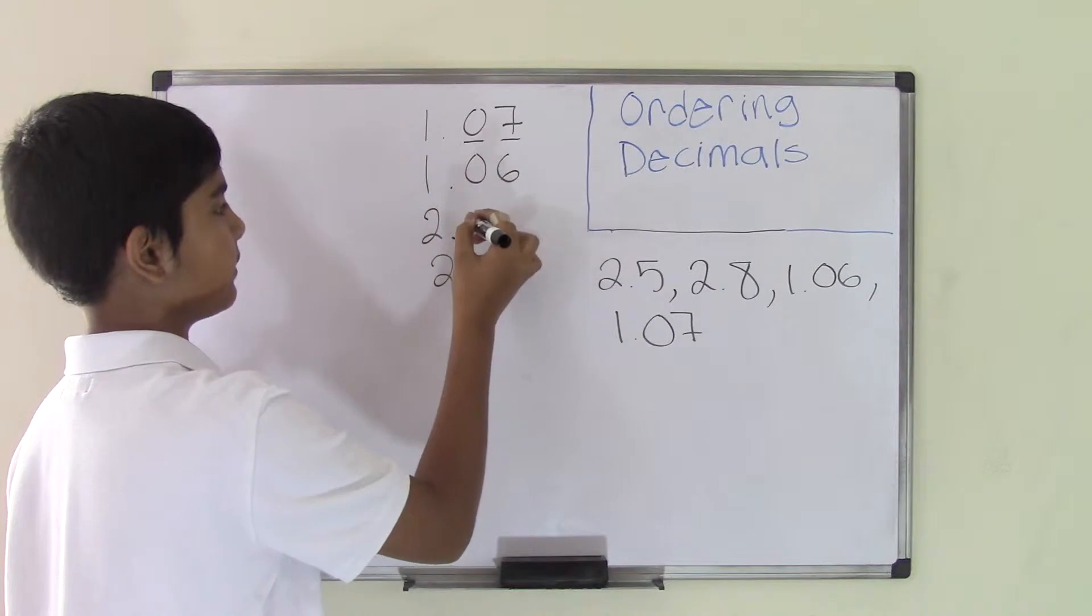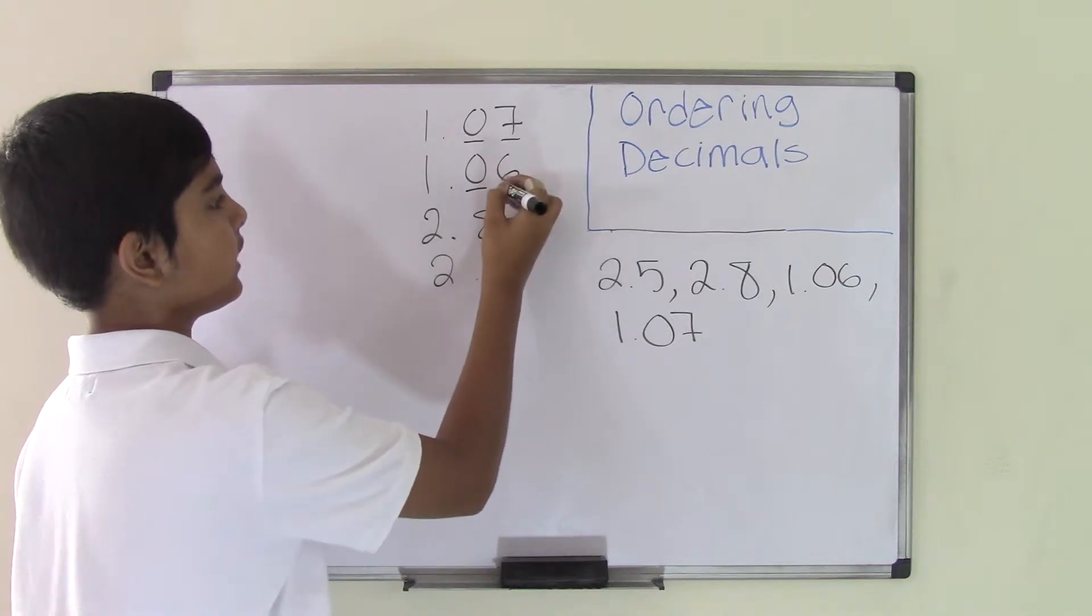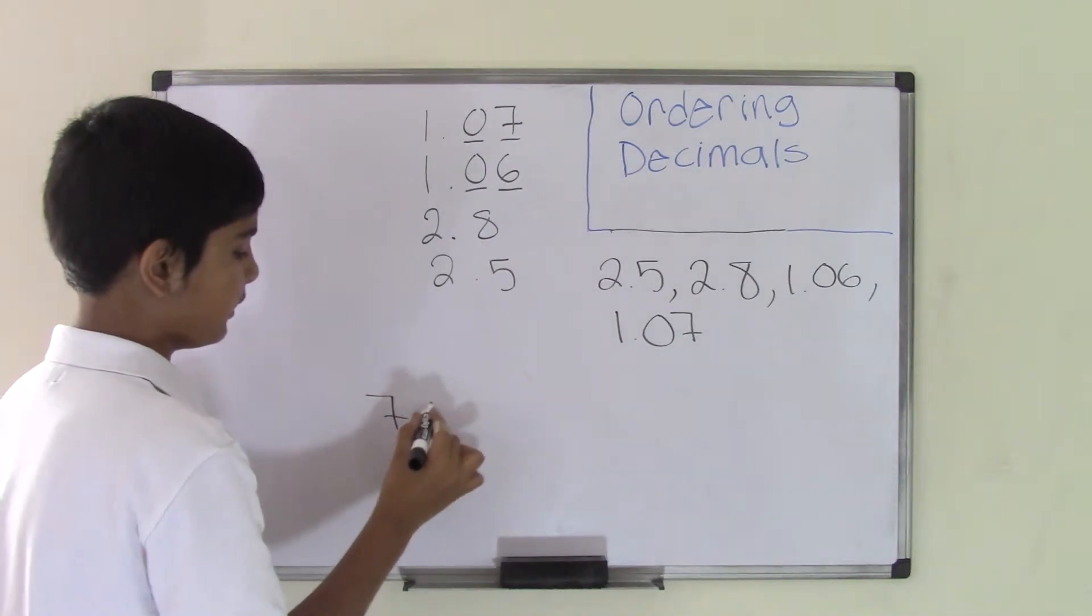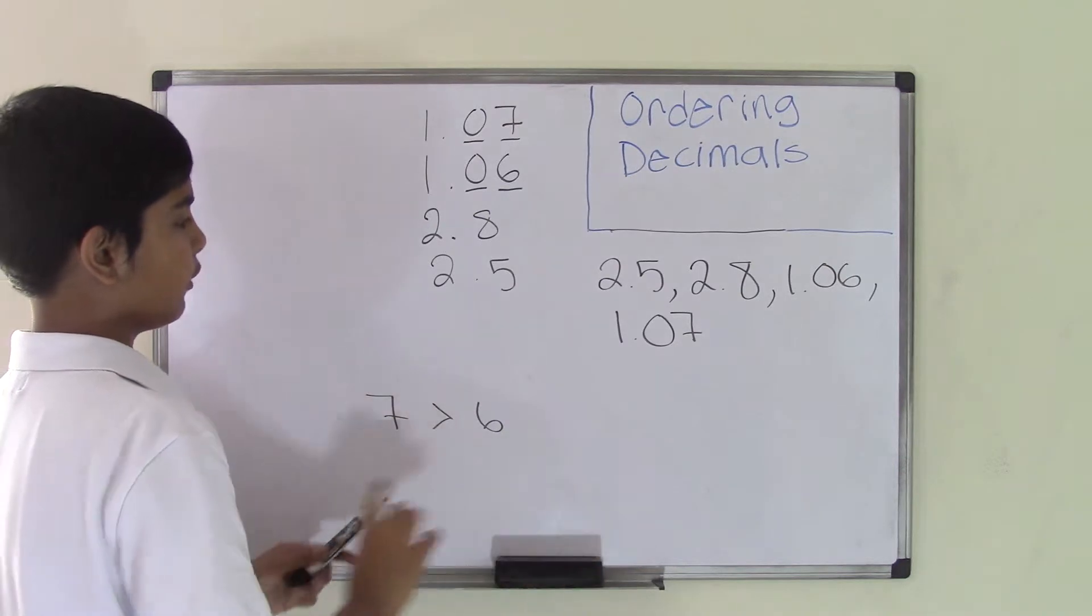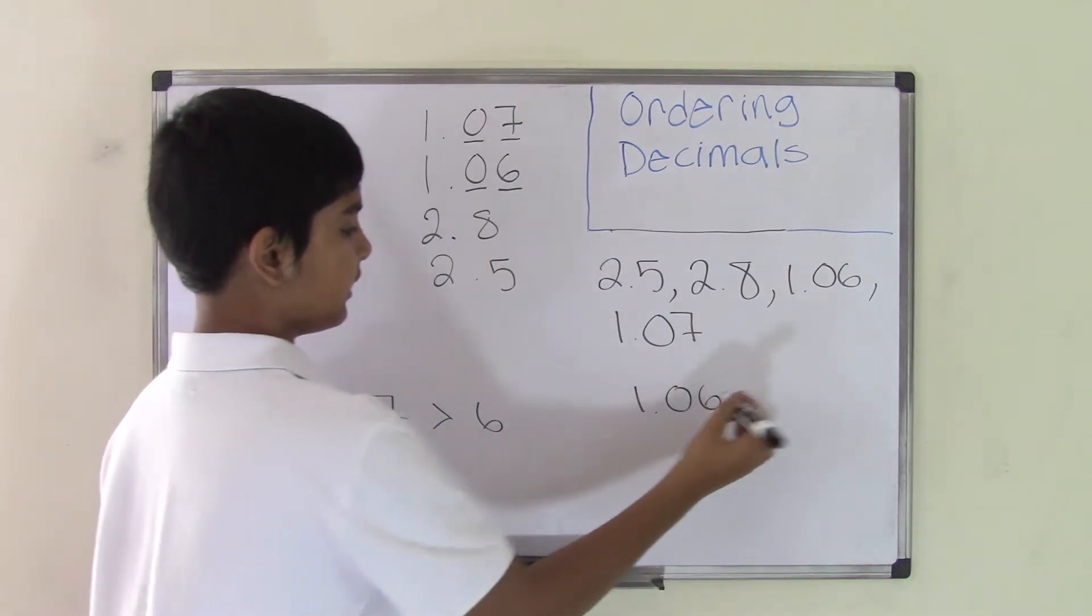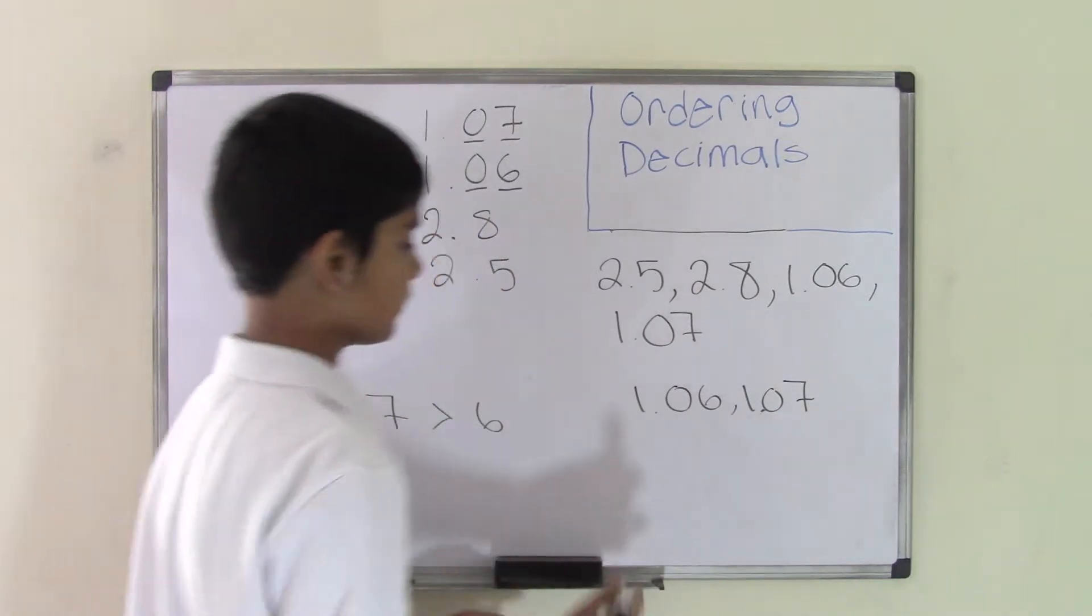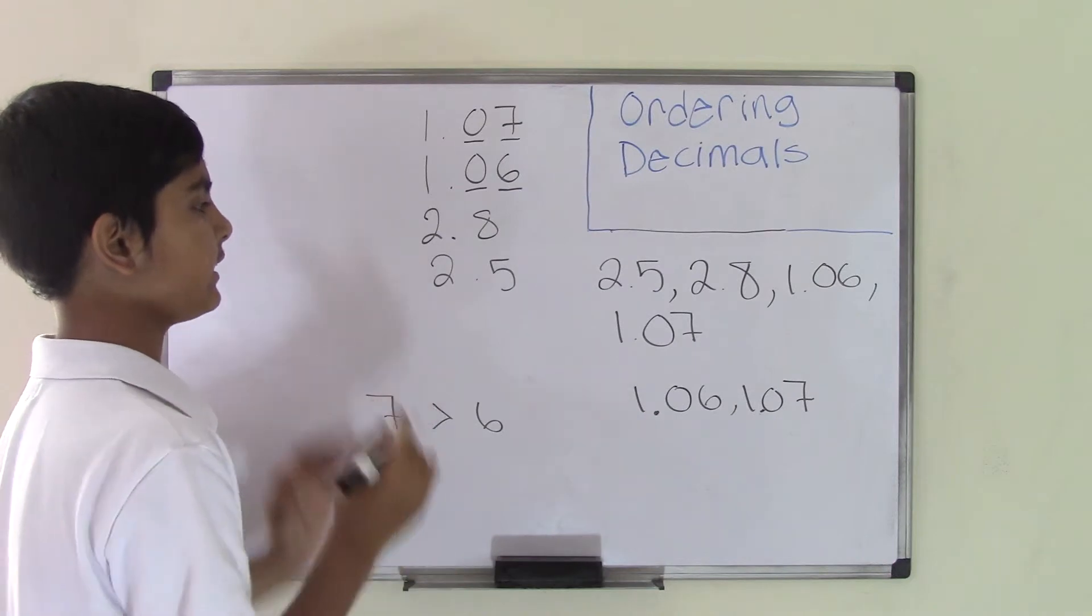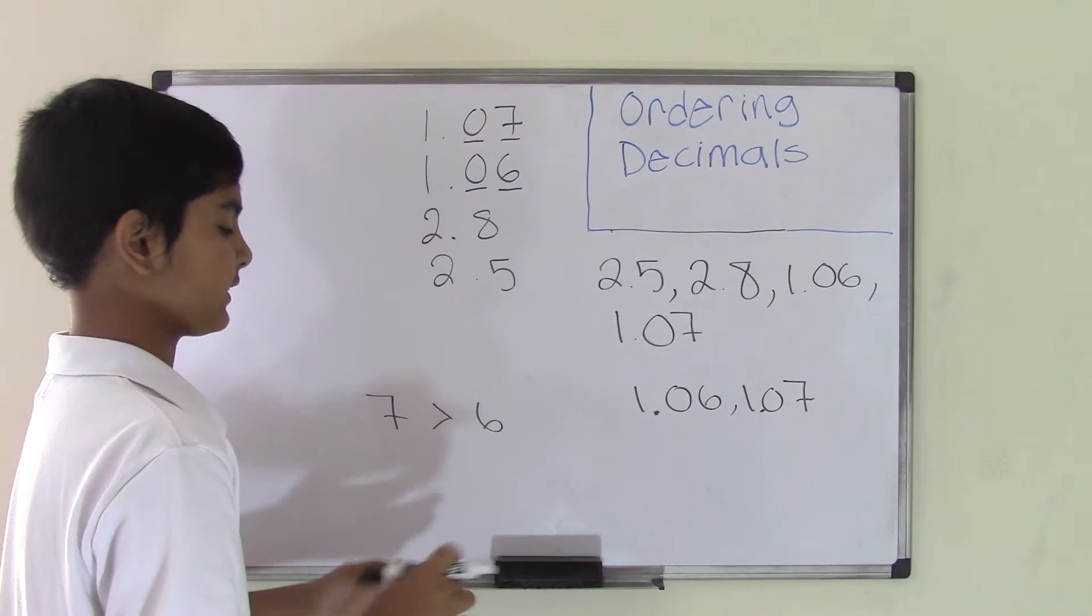Then we look at the second number, 1.06. In the tenths place value we have 0, but in the hundredths place value we have 6. We know that 7 is greater than 6, so 1.06 will go first since it's less, and then 1.07 will come. So 1.06 is the least of all the numbers, and 1.07 is the second least.